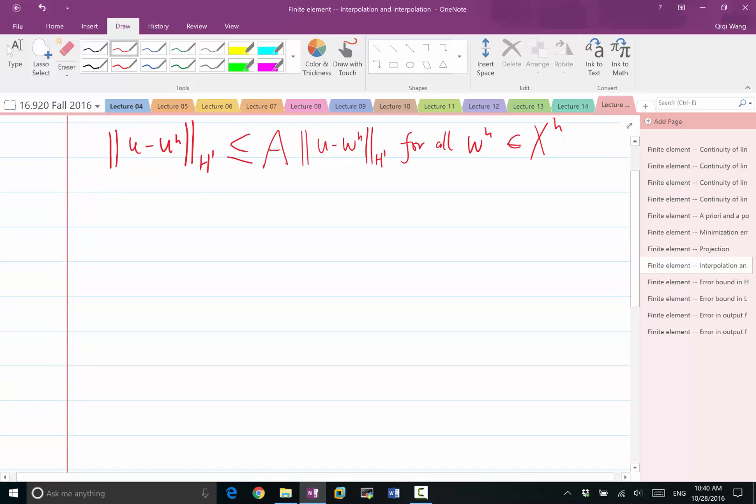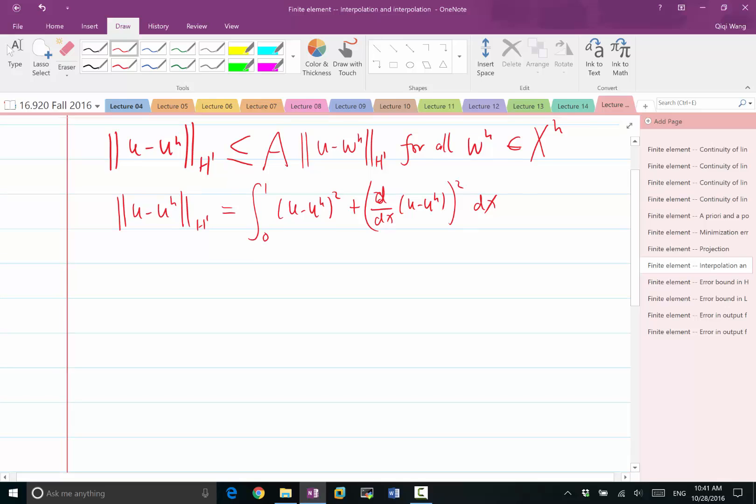So I can do that by the following. First, let's define what is U minus UH in the H1 norm. I don't need to use the Poincaré inequality again. I can just start by saying that the energy norm is coercive if the bilinear form is coercive. So U minus UH in the H1 norm squared is less or equal to 1 over B times the energy norm.